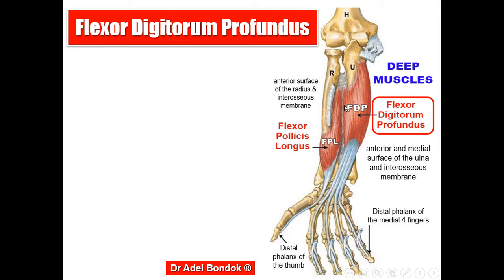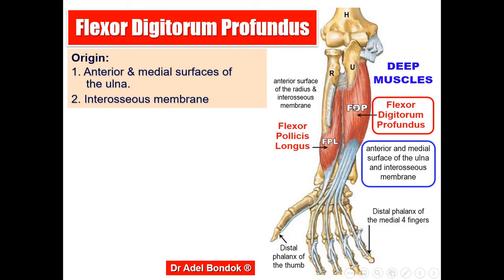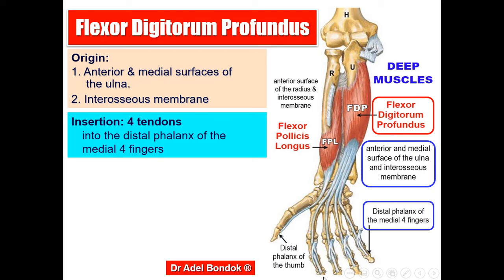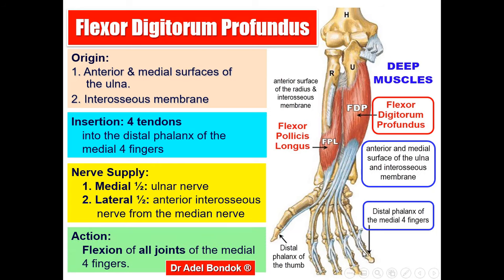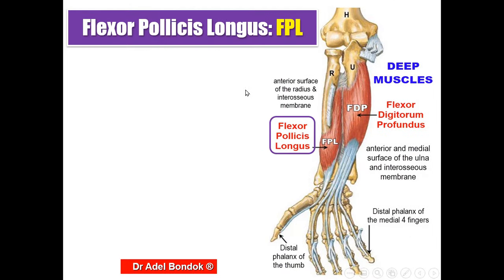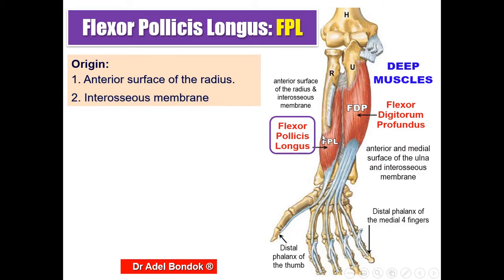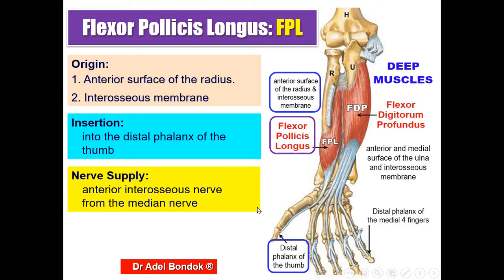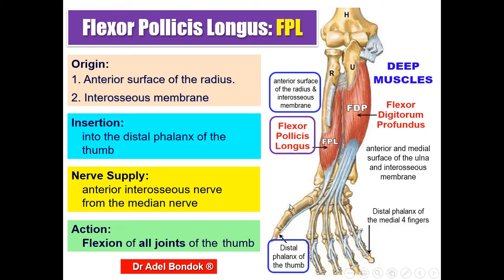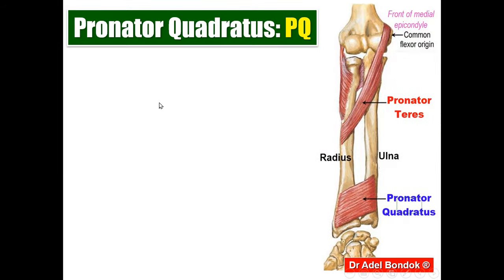Flexor digitorum profundus: origin from the ulna and the interosseous membrane. Insertion by four tendons into the terminal or distal phalanx of the medial four fingers. Nerve supply: medial half from the ulnar nerve, lateral half from the anterior interosseous nerve. Action: flexion of all joints of the medial four fingers. Flexor pollicis longus: origin from the radius and interosseous membrane. Insertion into the terminal phalanx of the thumb. Nerve supply: the anterior interosseous nerve, a branch from the median nerve. Action: flexion of all joints of the thumb.